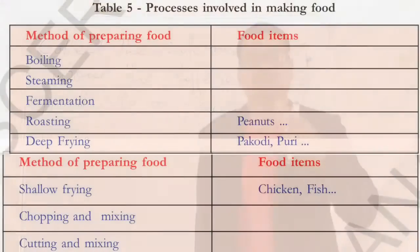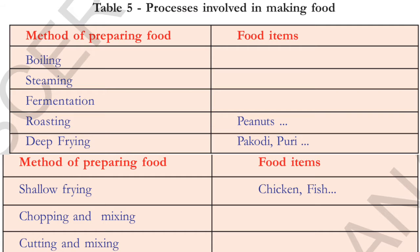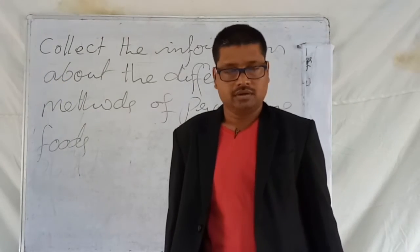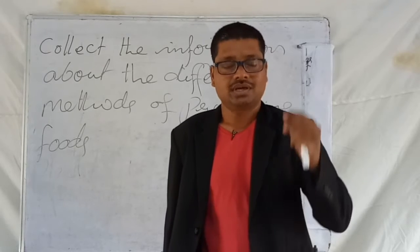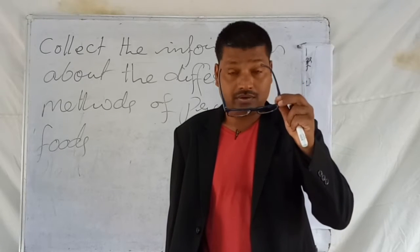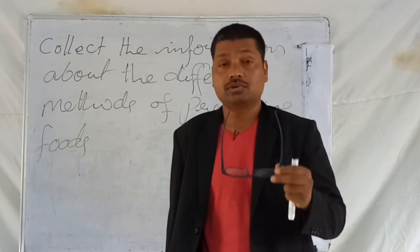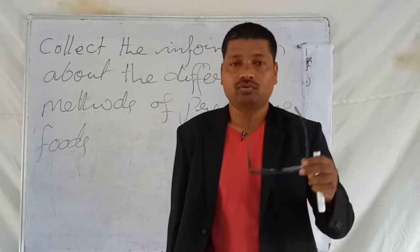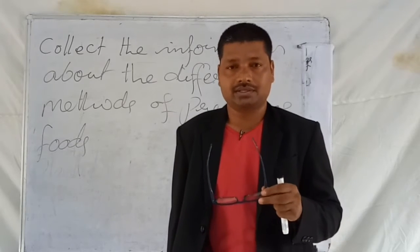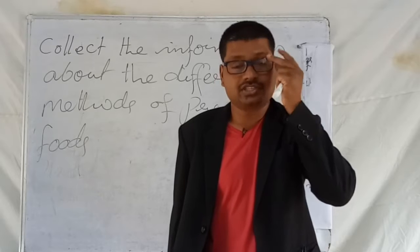The table will be displayed on the screen — you just look at the table and follow me. The processes involved in making food. The first method of preparing food is boiling. By using this method, we cook rice, eggs, and some vegetables like potato and tubers. We boil and cook different curries and different beans.